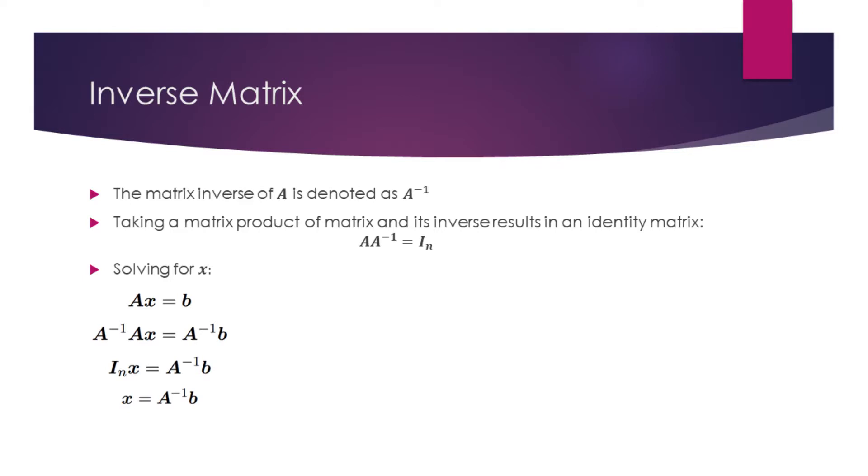The inverse of the matrix is denoted by adding a superscript minus 1. One of the properties of the inverse matrix is that taking a matrix product of a matrix and its inverse results in an identity matrix.